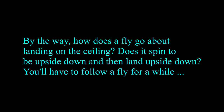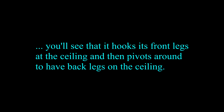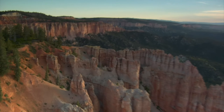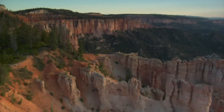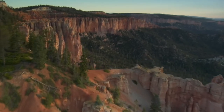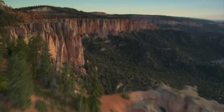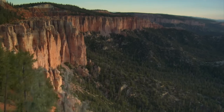How does a fly land on the ceiling? It hooks its front legs at the ceiling and then pivots around to have its back legs on the ceiling. Some scavenger birds will fly a bone high into the air and drop it onto a rock, which breaks the bone open and enables the bird to get extra food from the interior of the bone.